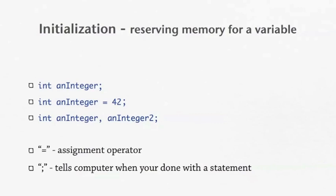So you can assign a number with it right here in the second one. And then the last one there, it's int an integer and then comma, an integer 2, semicolon. So you can initialize two variables at a time there.